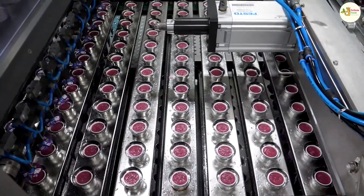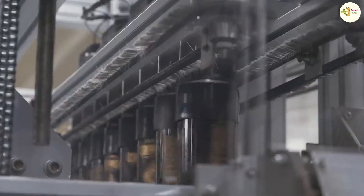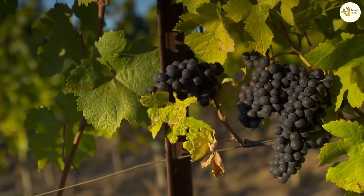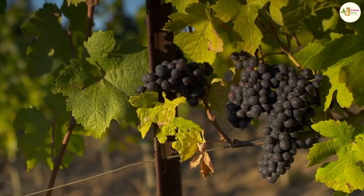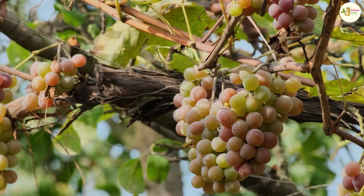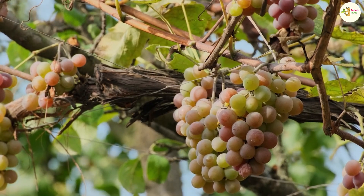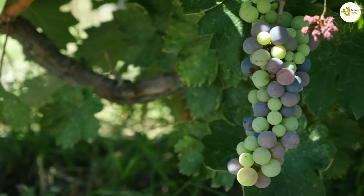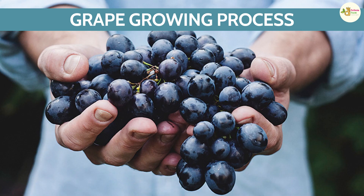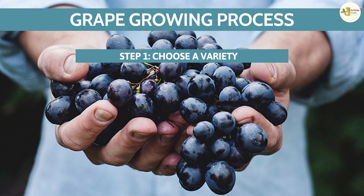Grapes grow and develop well on alluvial soil, rich in nutrients and well-drained. The appropriate pH for grapes is 6.5 to 7. The important condition that determines grape growing is the climate — the grape growing area needs to have dry climate conditions, low air humidity, and little rainfall. To create a grape farm, we need to follow these steps.